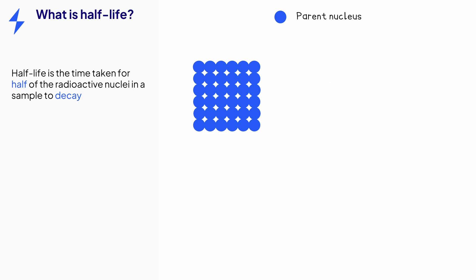It is the time it takes for half of the radioactive nuclei in a sample to decay. An alternative definition is the time it takes for the activity or count rate of a sample to decrease by half.